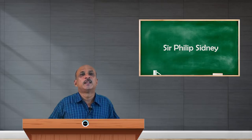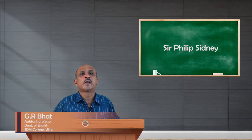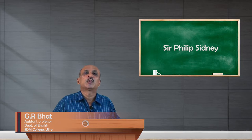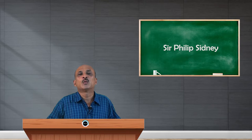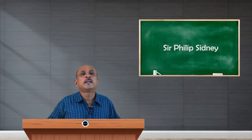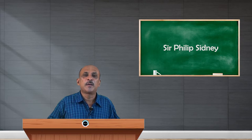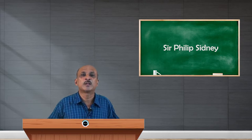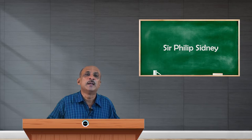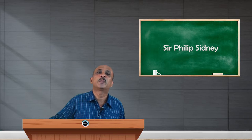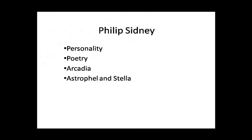Good morning friends. Elizabethan poetry is very vast, and the development of sonnets in the early 16th century is one stage of development in poetry in the Renaissance period. Apart from early poets like Thomas Wyatt and Surrey, we have the next great world of poets in the form of Edmund Spencer and Sir Philip Sidney. Edmund Spencer is supposed to be the greatest of Renaissance poets because of his revolutionary writing.